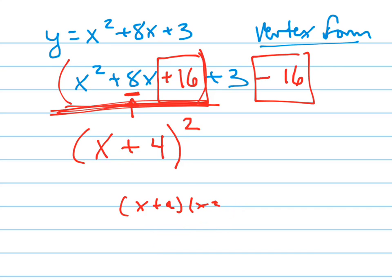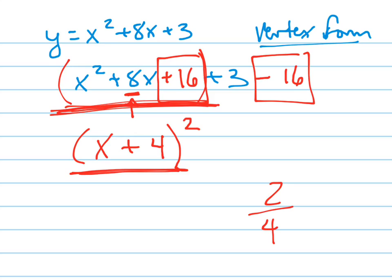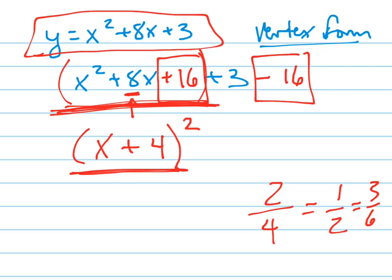Why did I add 16 in there? Because adding 16 gives me a different way to look at this problem. It's kind of like saying 2 fourths is fine, but isn't it also 1 half? And isn't it also 3 sixths? There are a lot of ways you can write this equation, and one other way is in vertex form.